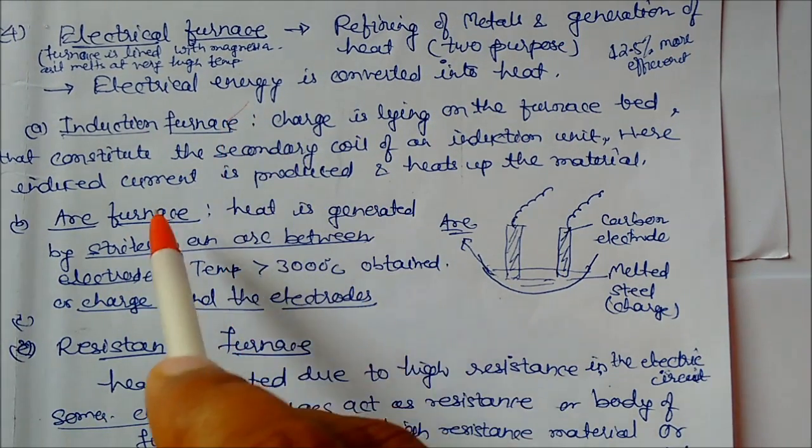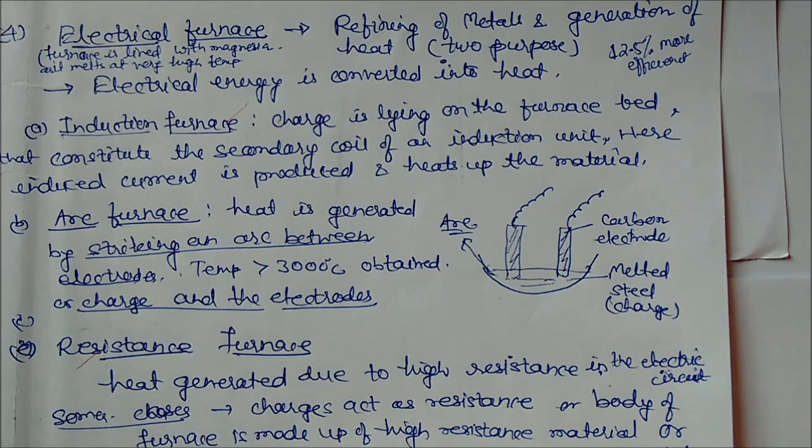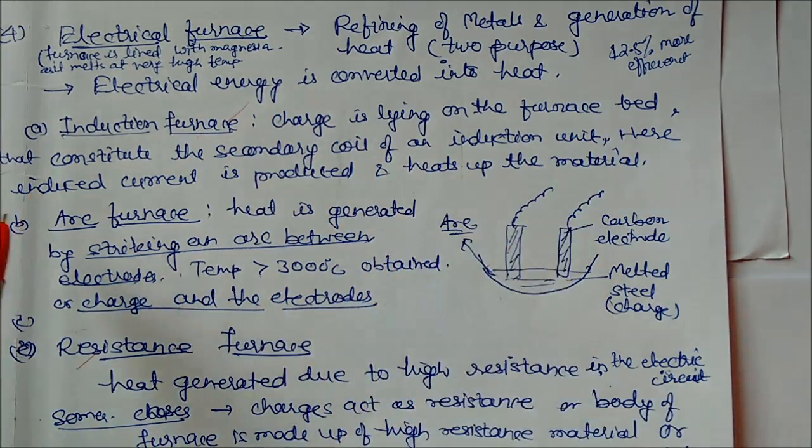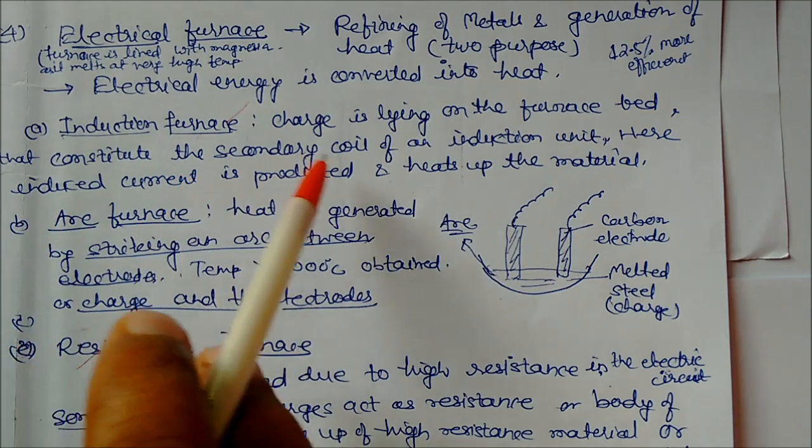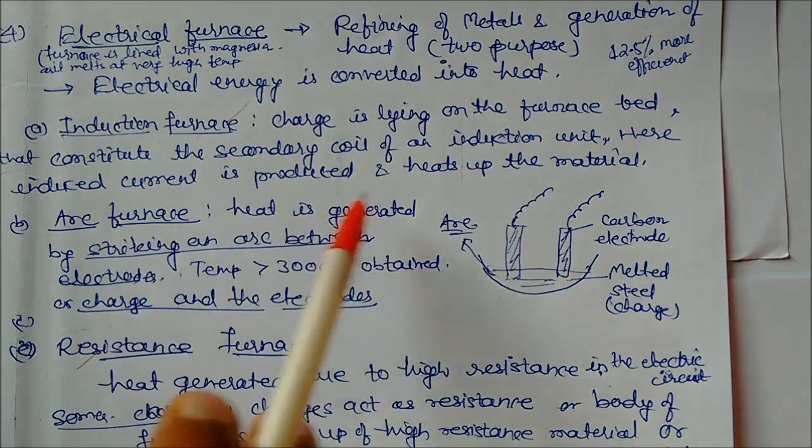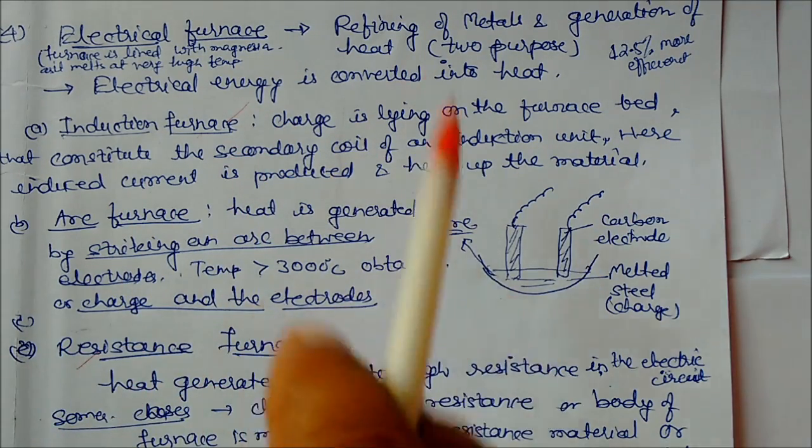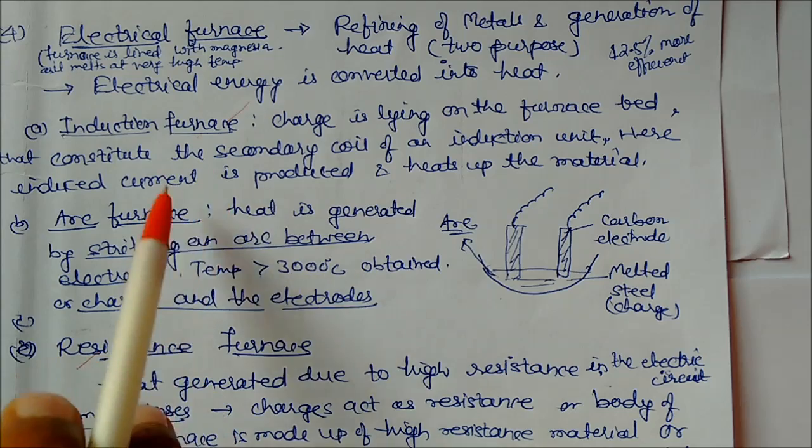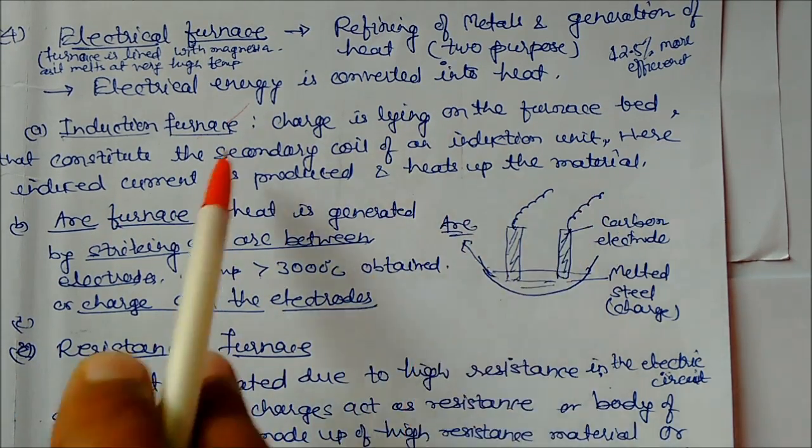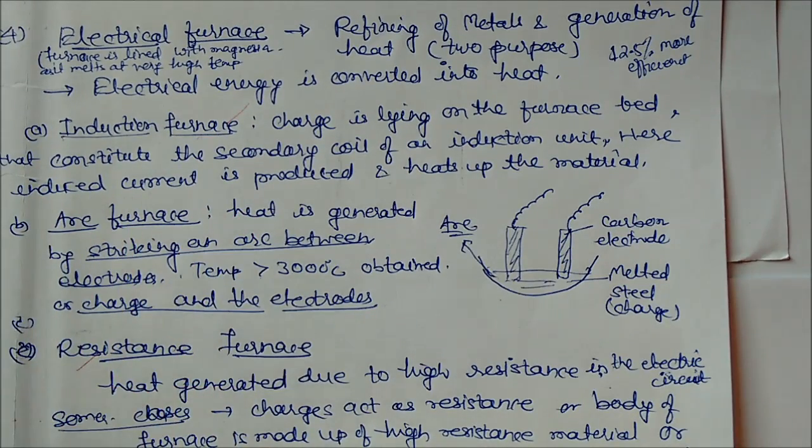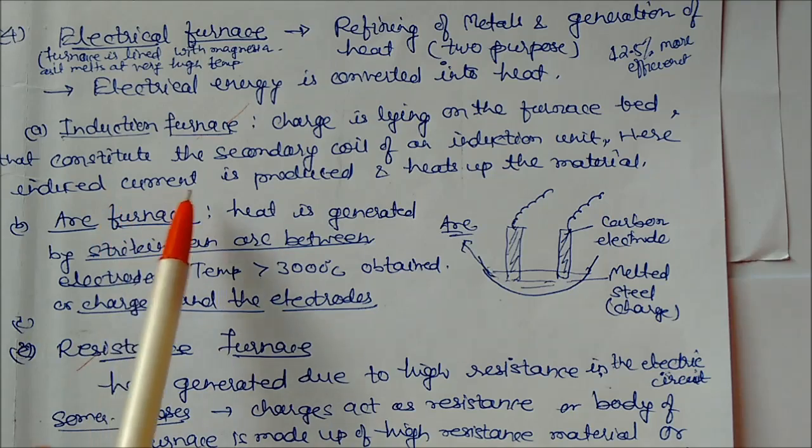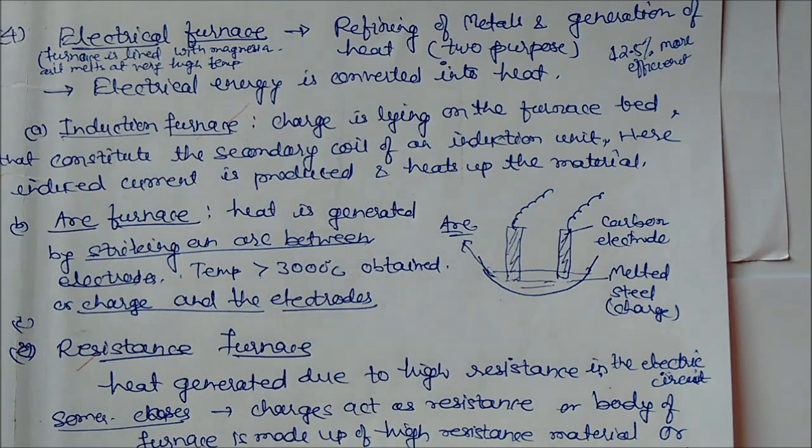We can see there are three furnaces: induction, arc, and resistance furnace. Induction furnace: charge again same metals and ores which is lying inside the furnace bed constitute the secondary coil of the induction. Secondary coil is the part of induction in which charge is kept inside. After passing induced current into the secondary coil, it will heat up the material.